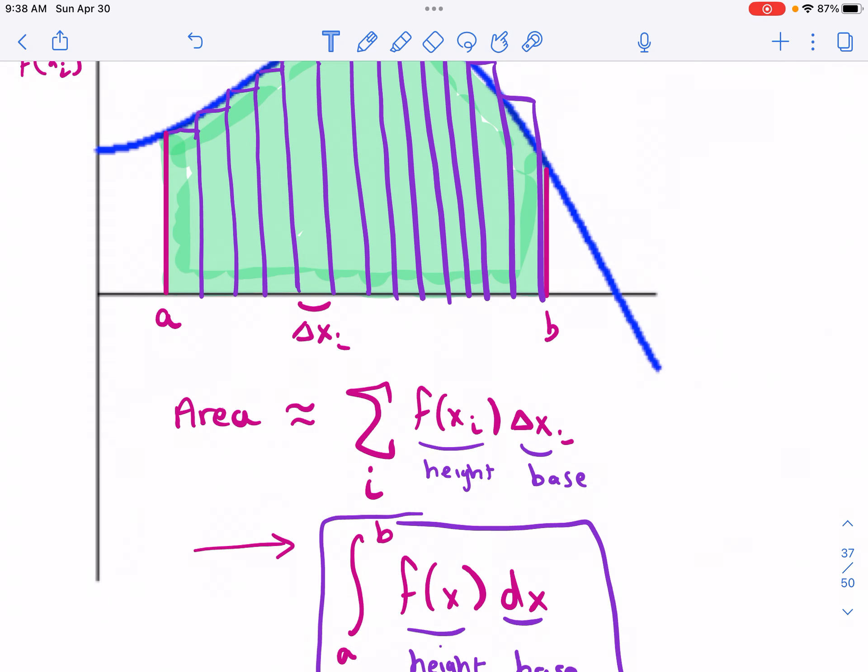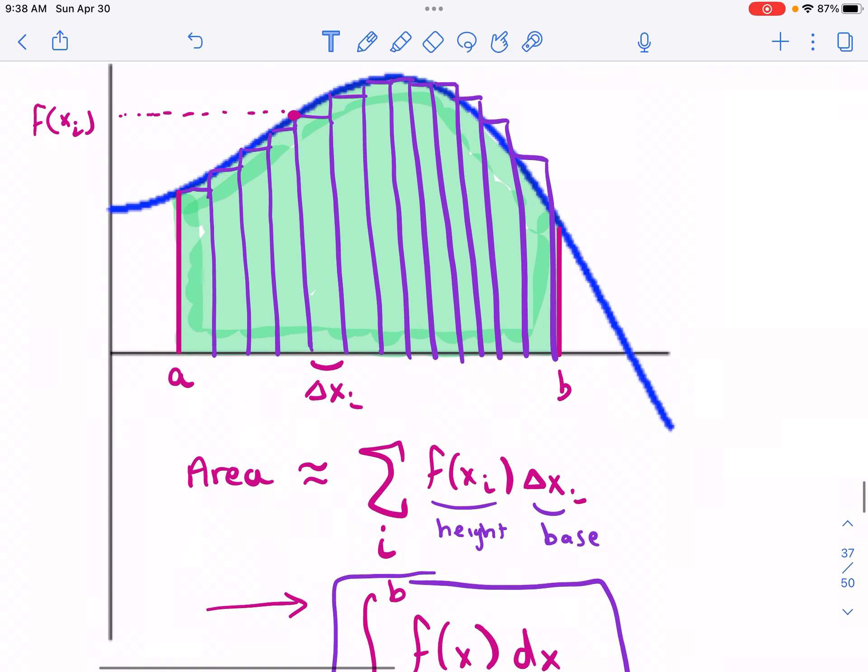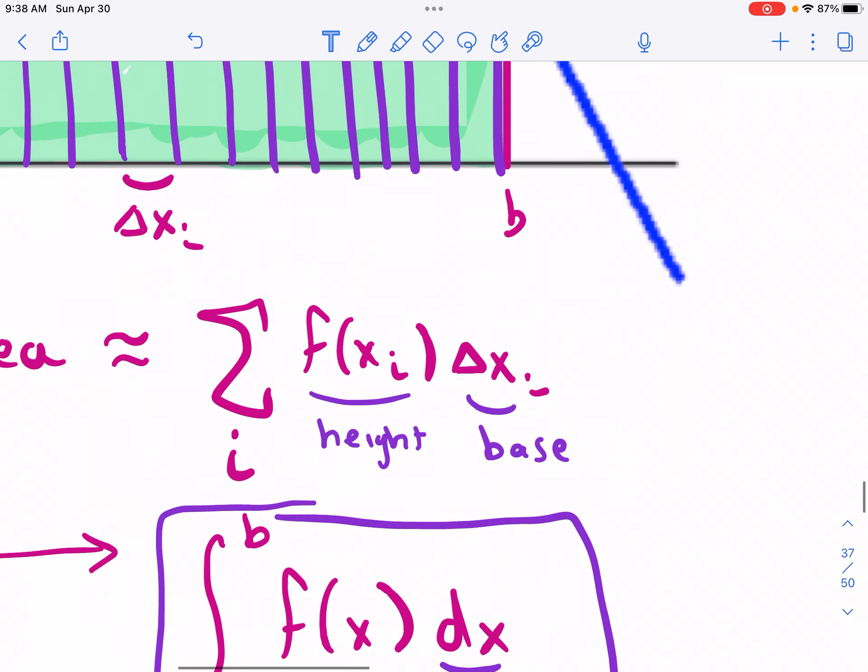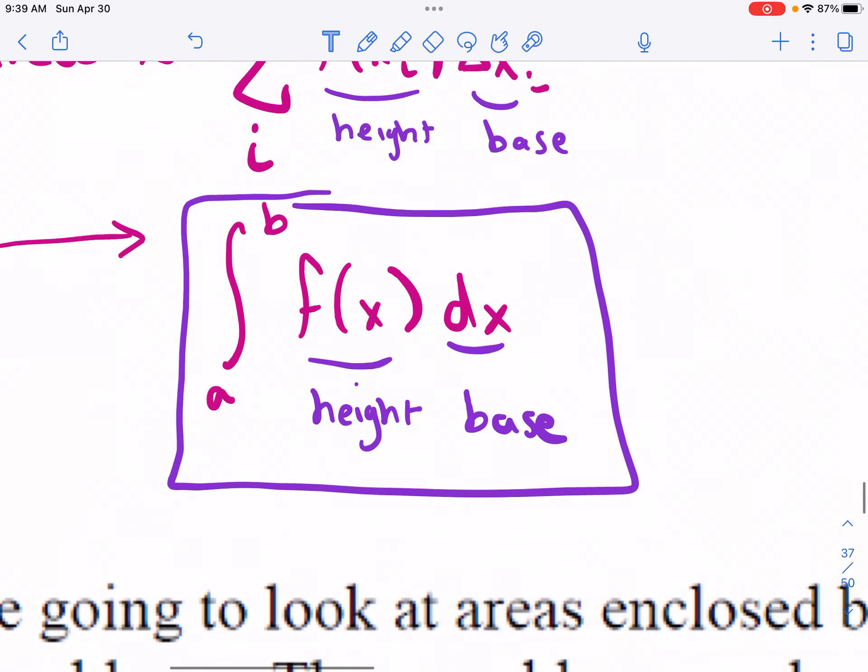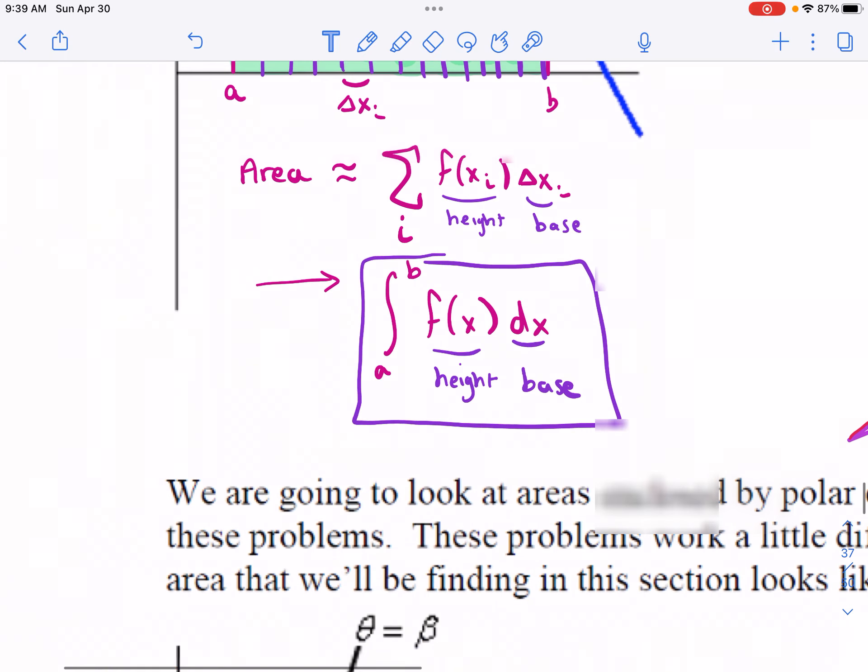You break up your region into a bunch of rectangles. You define each little base to be a change in x value, and then the height of the function is ultimately the output of the function at a particular x value. You sum up all those rectangles, and in the limit of the number of rectangles, you have the definite integral from a to b.